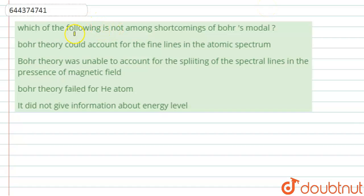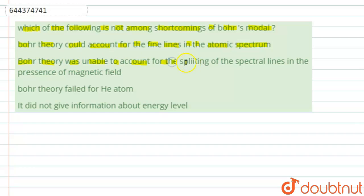Which of the following is NOT among the shortcomings of Bohr's model? We have to find out which option is not a shortcoming of Bohr's model. First option: Bohr's theory could account for the fine lines in the atomic spectrum. Second option: Bohr's theory was unable to account for the splitting of spectral lines in the presence of a magnetic field.